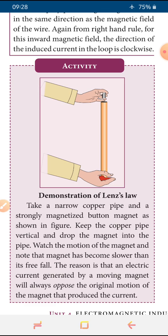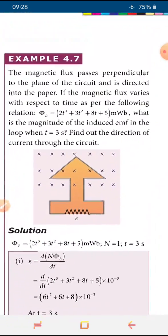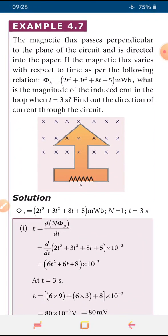Recalling Lenz's law: this law was explained by scientist Lenz. What he explained is that the induced current produced in any conductor always opposes the source which is used to produce that induced current. After this activity, we go to Example 4.7. The magnetic flux passes perpendicular to the plane of the circuit and is directed into the paper.